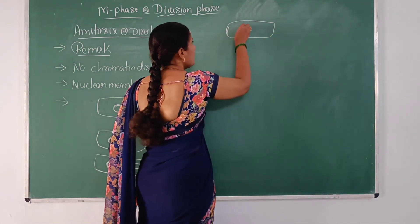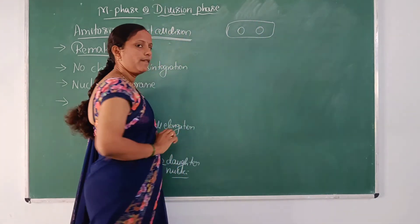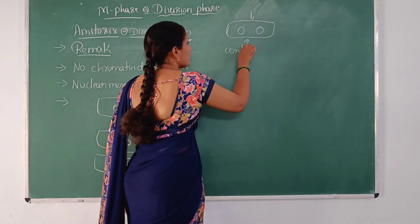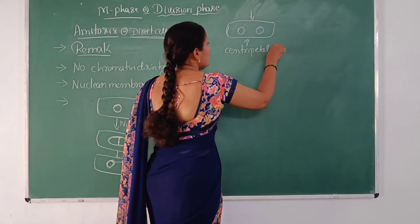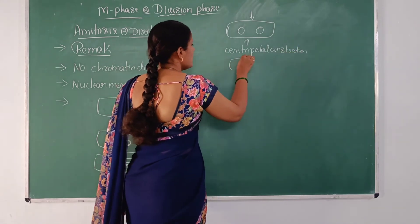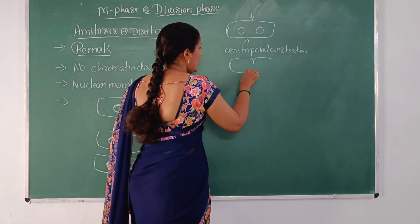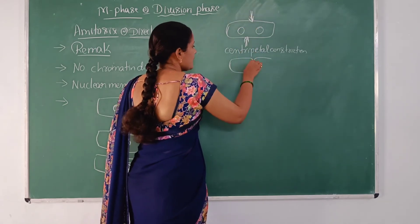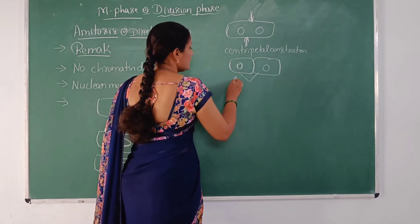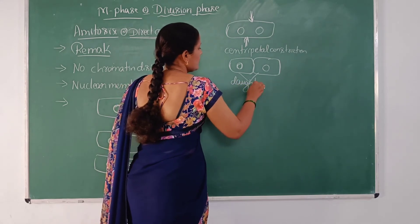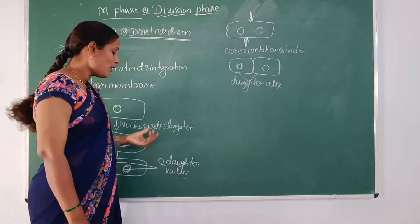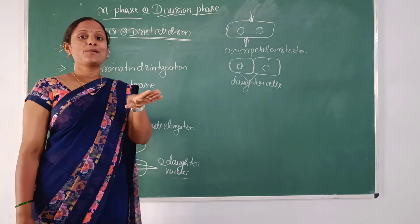After the formation of two daughter nuclei, the cell membrane will form a centripetal constriction — from both edges there is a centripetal constriction — and this results in the formation of two daughter cells. So that is a simple process, not true for divisions like mitosis and meiosis where special processes take place.